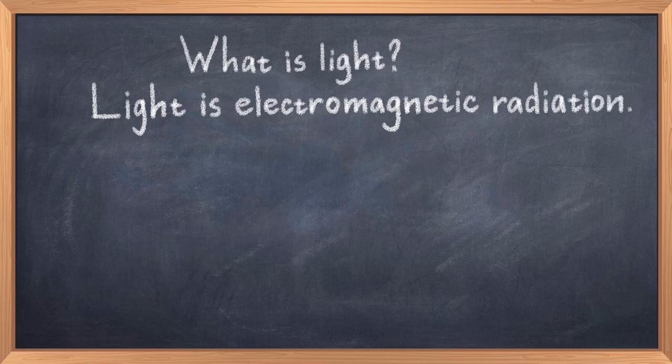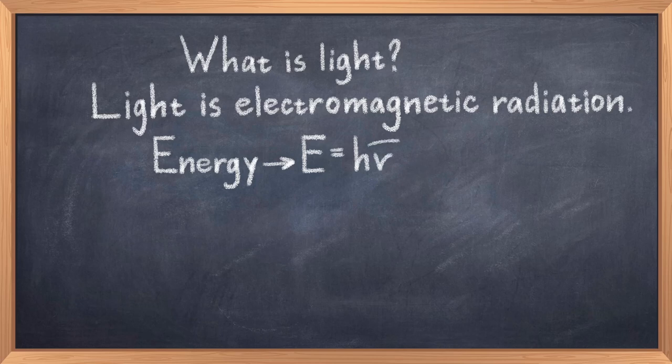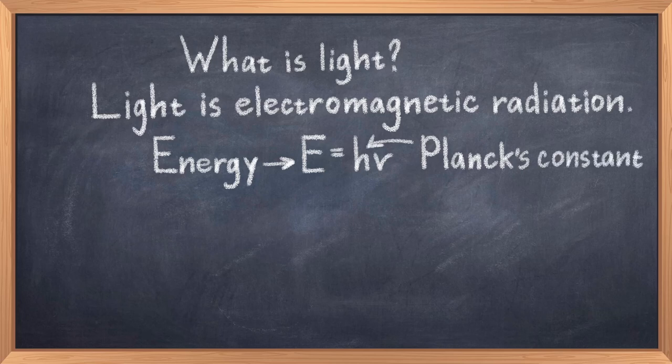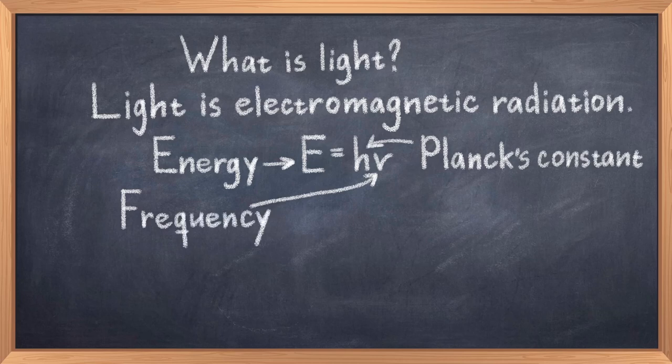but also gamma rays, x-rays, UV light, infrared light, microwaves and radio waves. What determines the classification of light is the energy or frequency. As described by Max Planck, with the equation E equals h nu, where E is the energy of the photon, h is the Planck's constant, and nu is the frequency of the light wave.